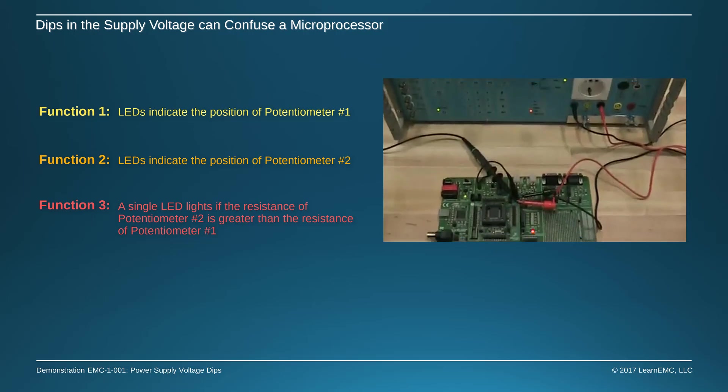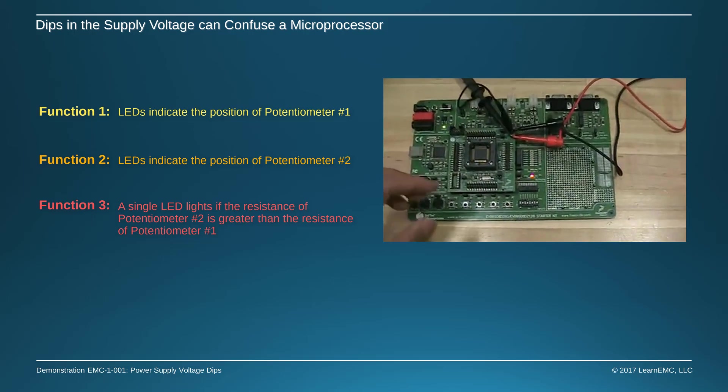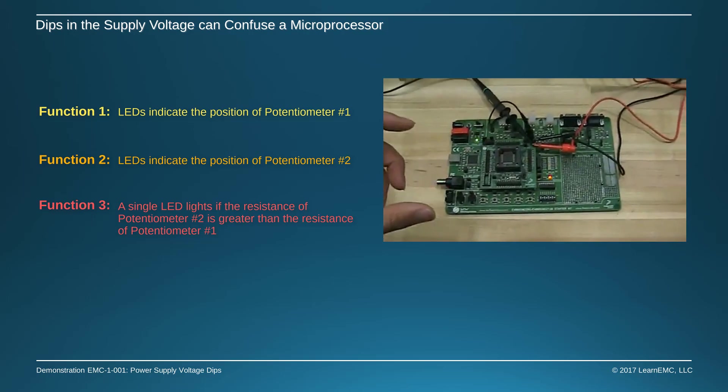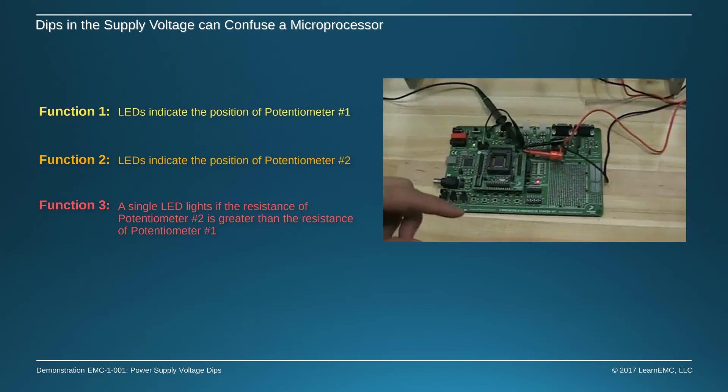When there is a power loss lasting more than a tenth of a second or so, the processor resets itself. No matter which function it was performing, it returns to function 1.